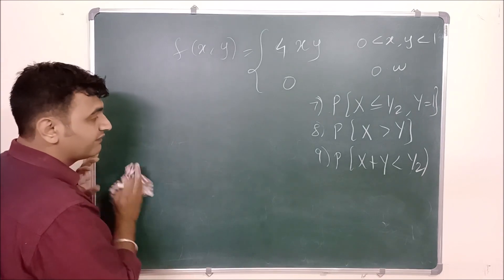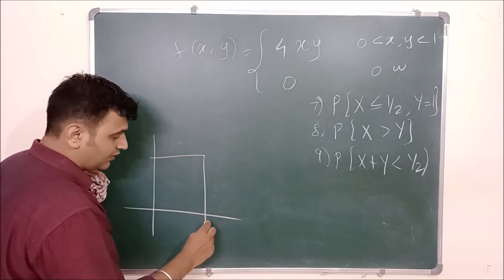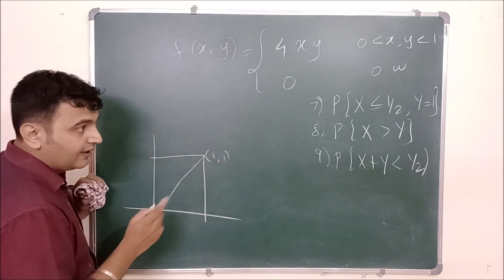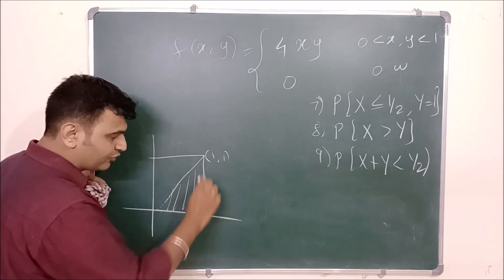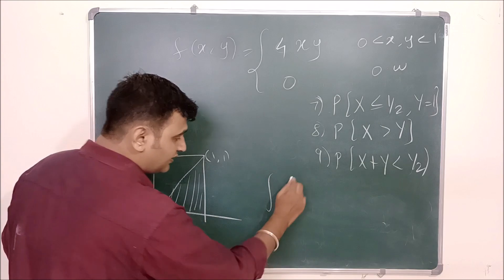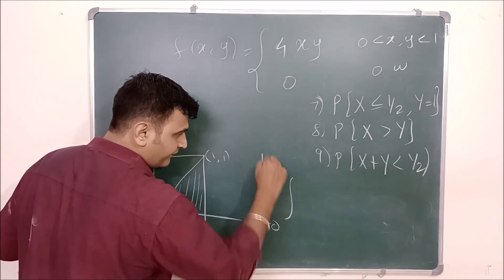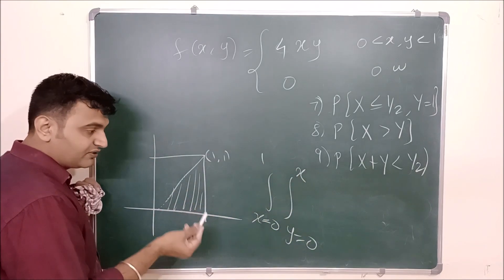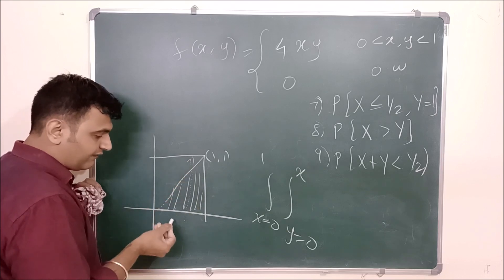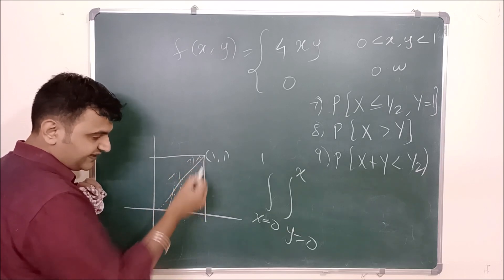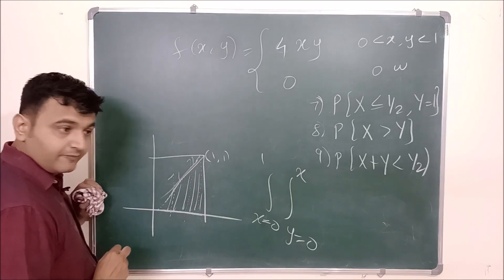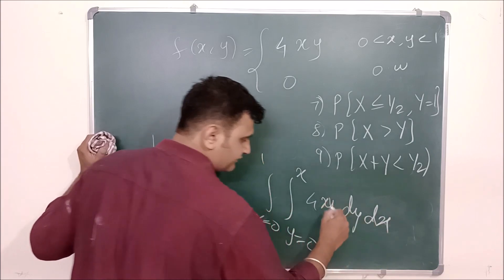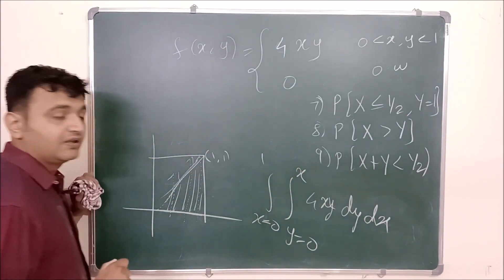The eighth question: probability that X > Y. This is the open square with dotted lines, and the line x = y. The region x > y is below that line. So x goes from 0 to 1, and y goes from 0 to x — because a line parallel to the y-axis enters from 0 and exits at y = x. The integral is the double integral of 4xy dy dx with those limits. Solving gives the answer.